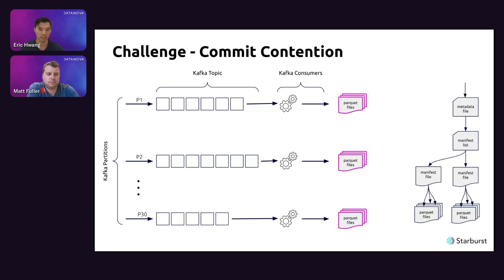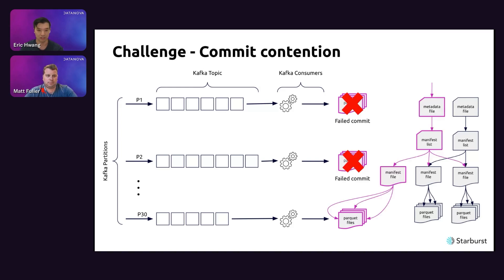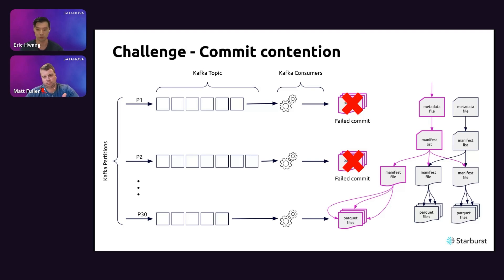Another challenge is how to commit to Iceberg tables when multiple consumers are writing concurrently. Iceberg uses optimistic concurrency control — to commit, you replace the top-level metadata file with a new one linking in the new files. If multiple committers try to do this simultaneously, only one succeeds and the rest fail. At low concurrency that's acceptable, but as you scale, progress stalls. Empirically, we've seen this tops out at around 10 to 20 concurrent committers for near real-time data.